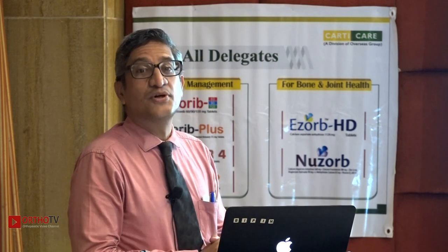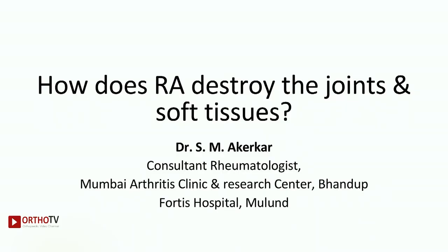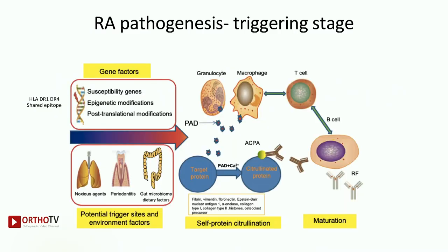Let us start with first: how does RA really destroy the joints and soft tissues? As surgeons, I am sure I need not tell you this — this is something common — but from the medical perspective, what really happens? Does it really start in the joints? What really happens? Let us have a look.